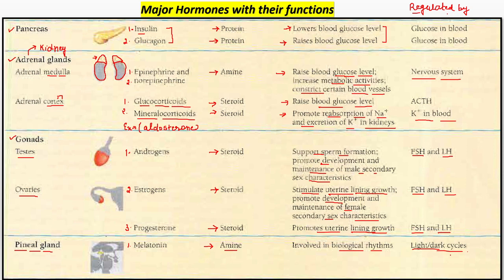Melatonin ka jo production hota hai, woh raat ke samay hota hai, and ye promote karta hai sleep ko. Kaafi saari logon ko insomnia ki dikkat hoti hai, to woh bhi isi tariqe se, dawaiyon se koshish karte hain ki melatonin ka secretion high ho, and jo insomnia ki dikkat hai, sleep-wake cycle mein unki issues hain, woh mainly solve ho. Melatonin ko sleep hormone bhi bola jata hai, jiska secretion raat ke samay — jab there is no light, ya natural light present nahi hai — uske case mein tenfold increase ho jata hai.